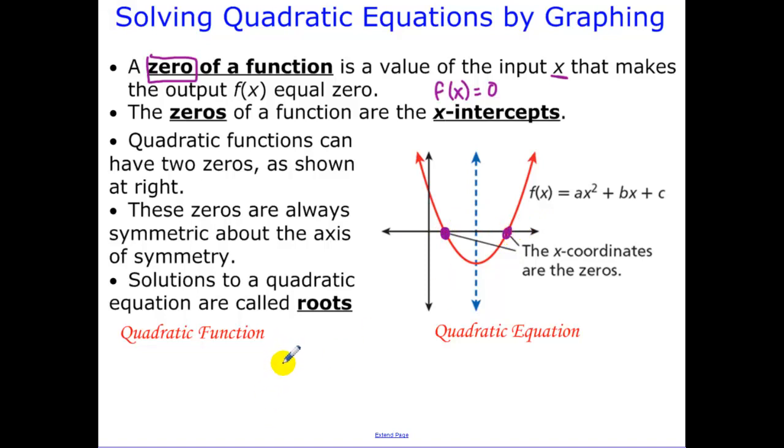Quadratic functions can have two zeros, like I have shown here, and these zeros are always symmetric across our axis of symmetry. The distance, the amount of x's from any point on the quadratic is the same to the left as it is to the right.